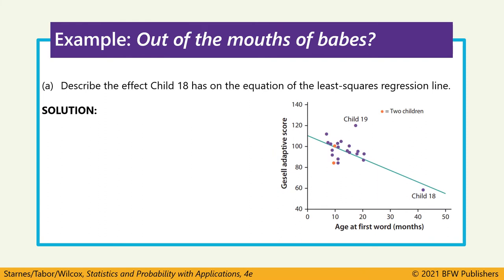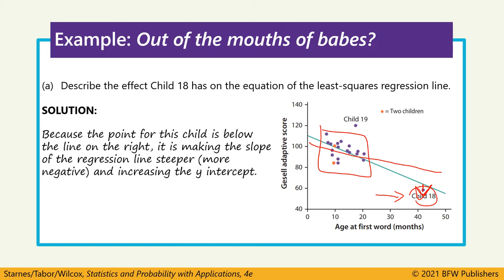Starting with child 18, located in the bottom right, this point is far away from the other points horizontally, which gives it high leverage. It's an influential point that pulls the line of best fit towards it — either up or down depending on whether it's above or below the line. Think of the green line like a seesaw: without this point, the line would be flatter and less steep. This point pulls the line towards it, making it steeper, increasing the correlation and increasing the y-intercept.